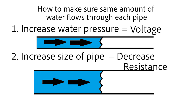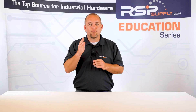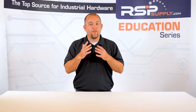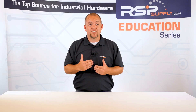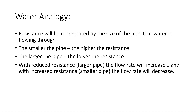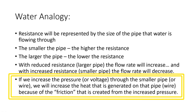One thing to keep in mind: if we increase the pressure or the voltage through a smaller wire with more resistance, it will increase the heat generated on that wire because of the electrical friction created from this increased pressure or voltage.